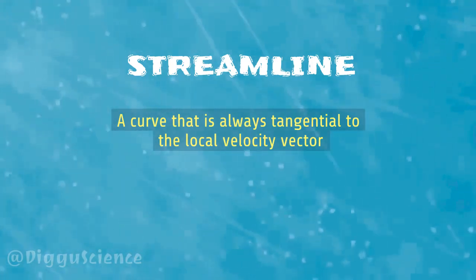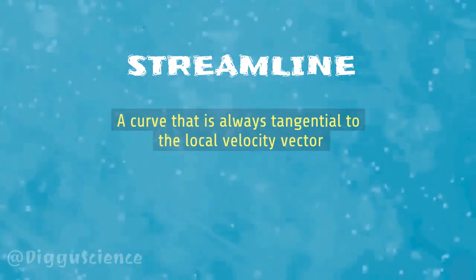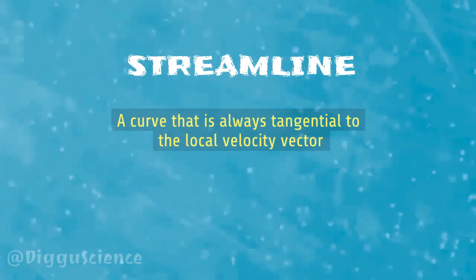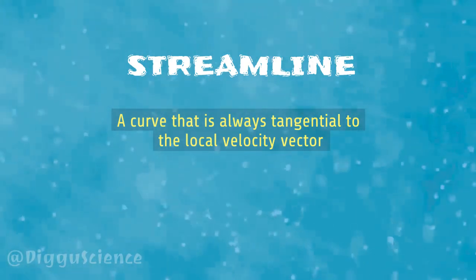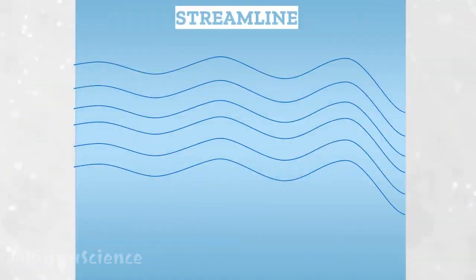A Streamline can be defined as a curve that is always tangential to the local velocity vector. To understand the definition of Streamline, look at the following illustration.